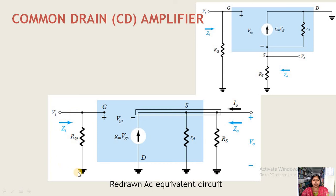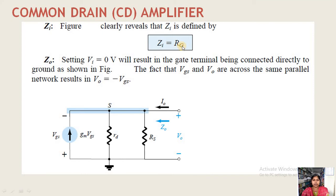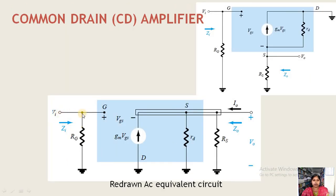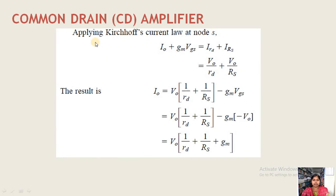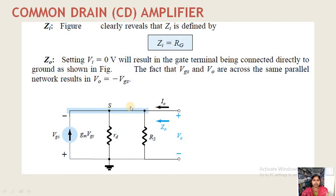In the redrawn AC equivalent circuit, drain is at the top, with GM·VGS flowing to the source, and small rd in parallel with RS at the source terminal. Input impedance is simply ZI = RG. To calculate output impedance, set VI = 0, which grounds the gate terminal. Applying KCL at node S: I0 + GM·VGS = IRd + IRs.